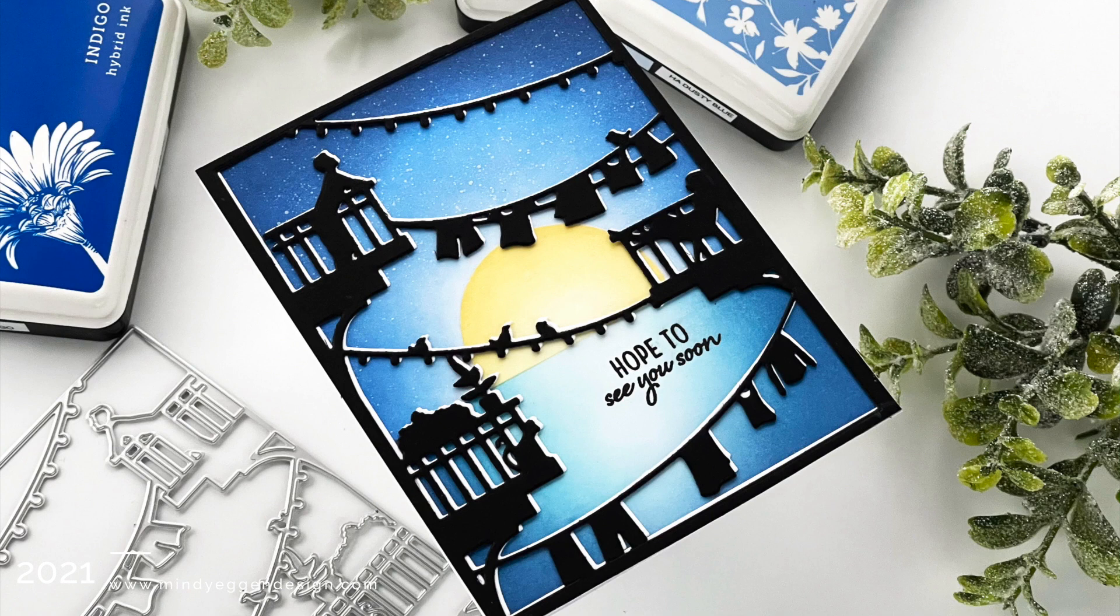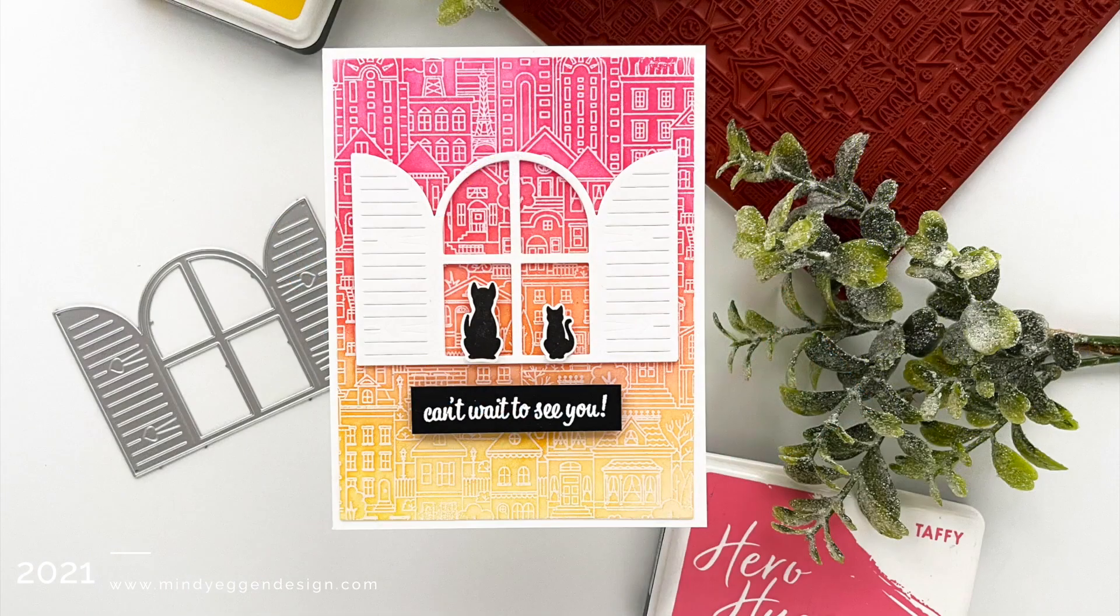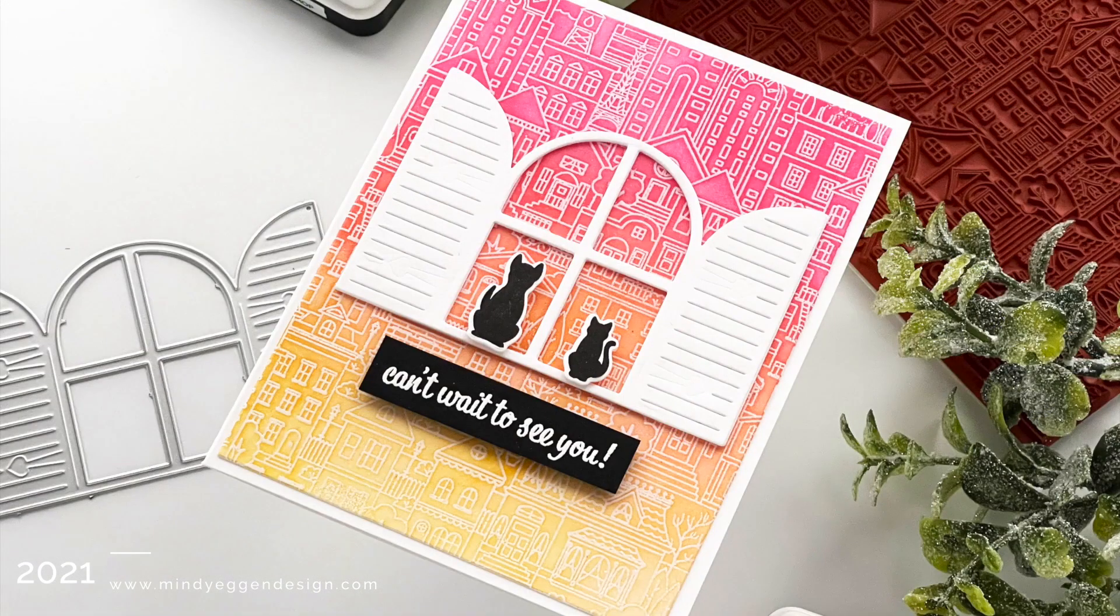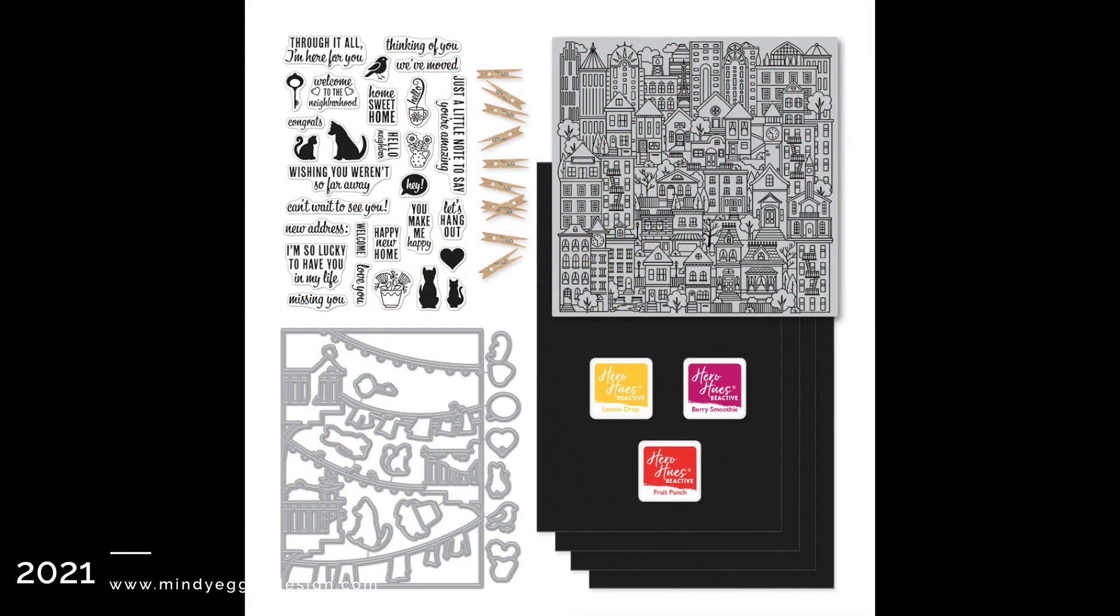The first card that I'm going to create for you is recreating my countdown card. It is this gorgeous serene scene and I'll be tweaking it just a bit. Then the second card will be using the background stamp included in the kit. This month's kit is all about cities and neighborhoods.